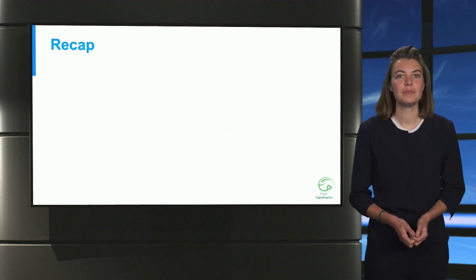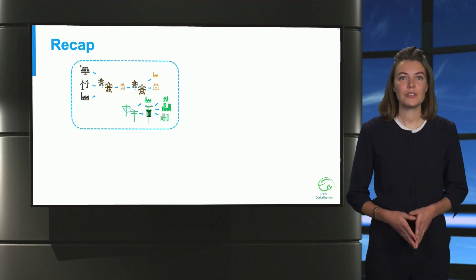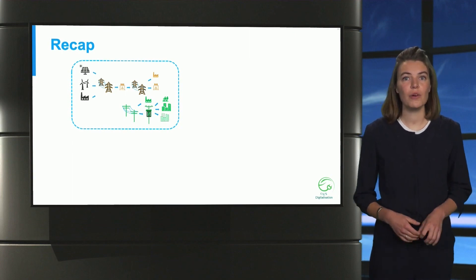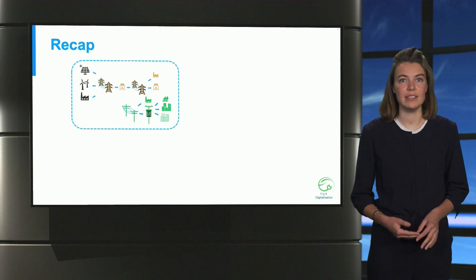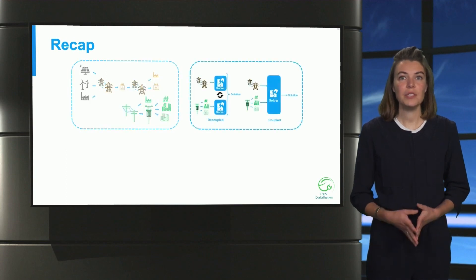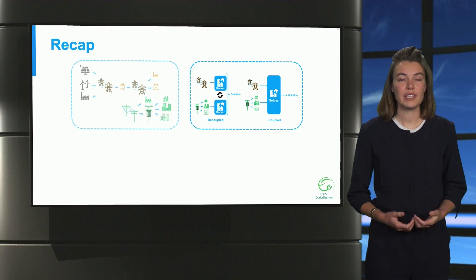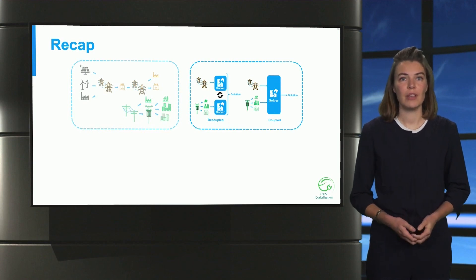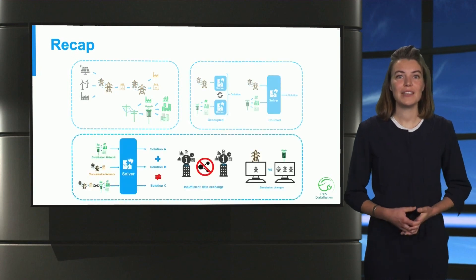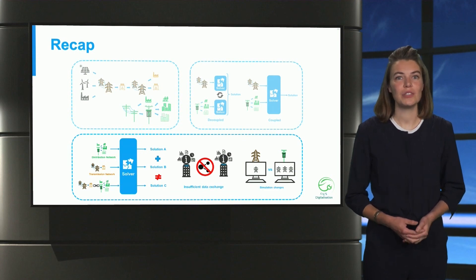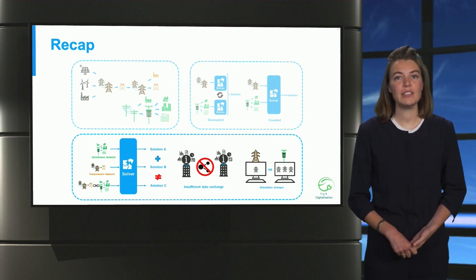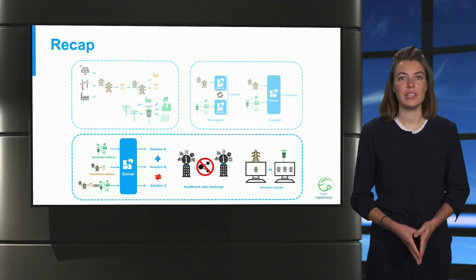Let us summarize. We explained that the transmission grid is meshed, balanced, and requires only a single phase simulation, as opposed to the distribution grid. Also, both parts are handled by different entities. Then we saw that it's needed to couple them in the future. For this, two methods can be used: a decoupled and a coupled approach. Finally, we have seen that there are challenges when coupling the two networks. These include the non-linearity of the solutions, insufficient data exchange, and a different type of simulation needed for each network.